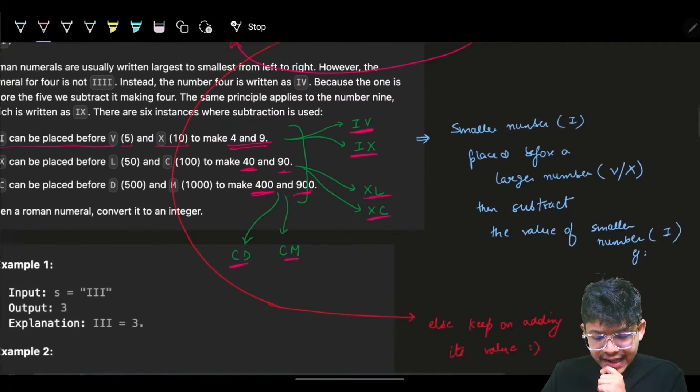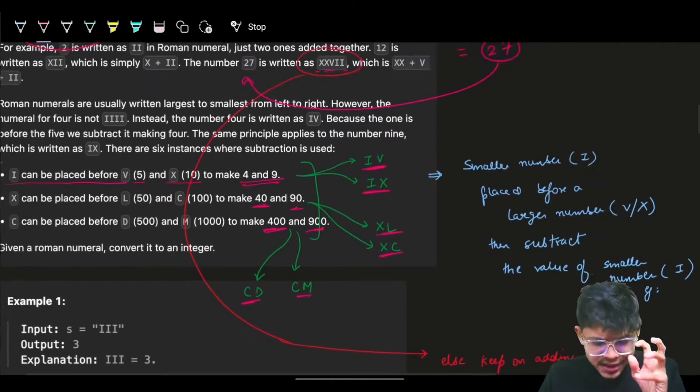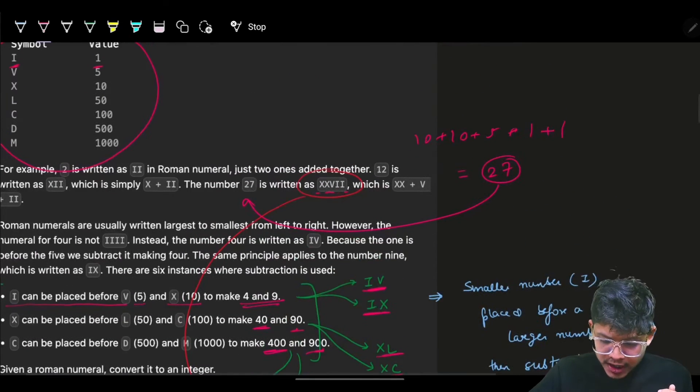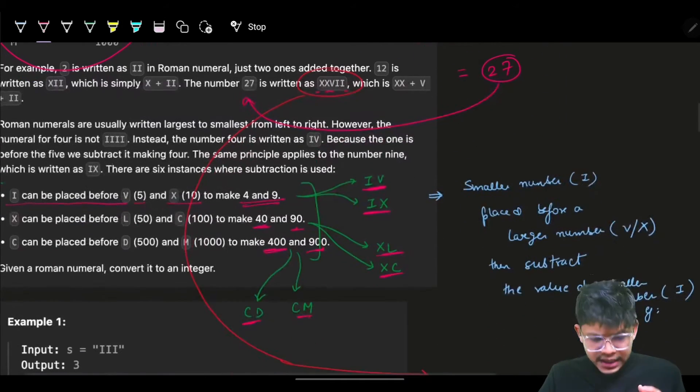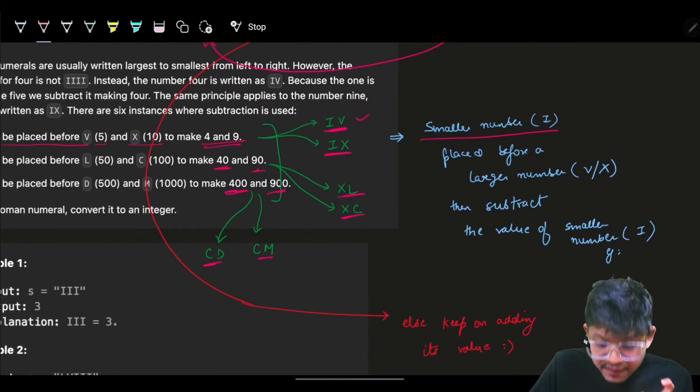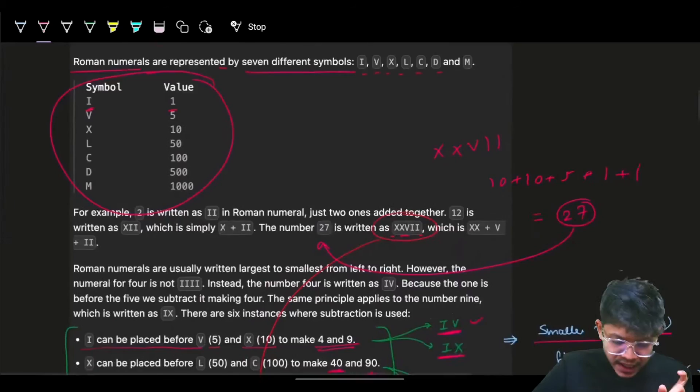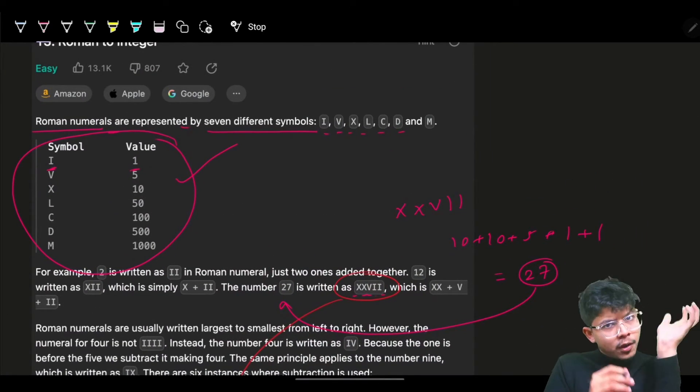What is special in these cases? You'll see a smaller number - I corresponds to 1 - placed before a larger number which is V or X. I'll maintain this mapping from Roman numerals to their integer values.